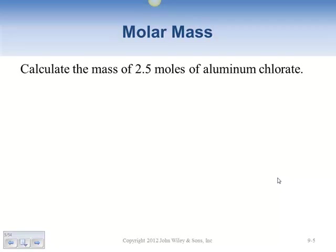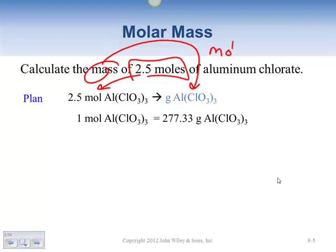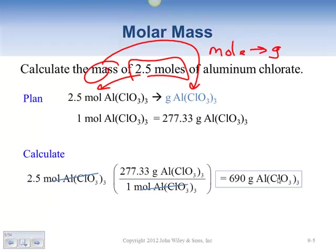What happens if you have 2.5 moles of that compound? The planning process says: what do you know? We know we have 2.5 moles. We need to come up with a number of grams — so our plan is to go from moles to grams. We start with the number of moles, use the conversion process, knowing 277.33 grams per mole, and that gives us the overall grams. Since 277 doubled is about 554 and we want slightly more than double, the answer of roughly 693 grams makes sense.